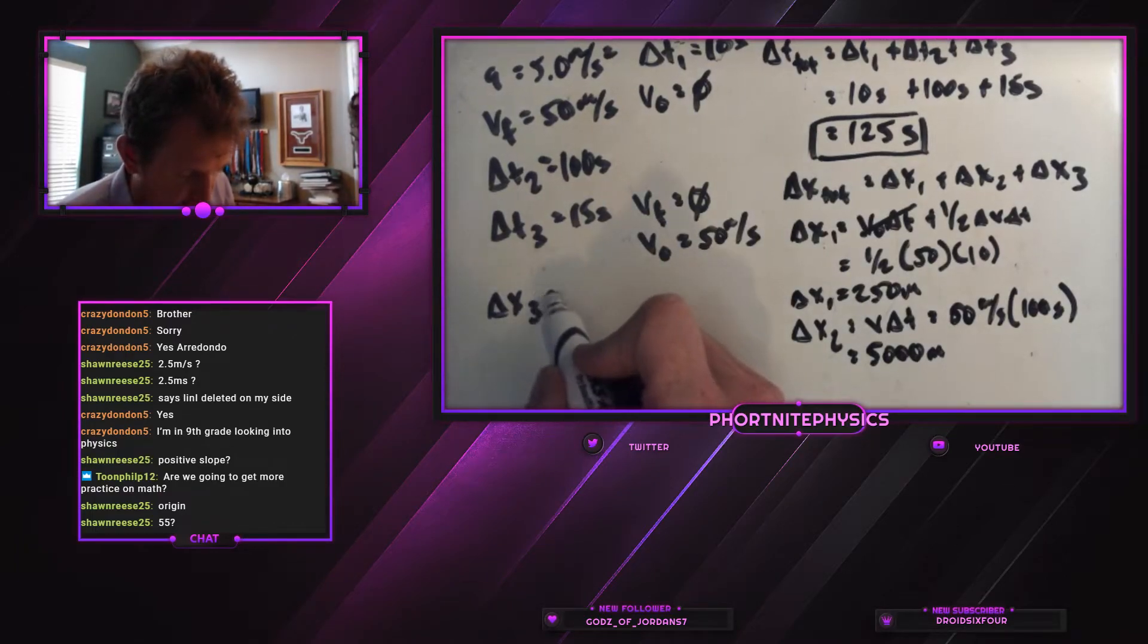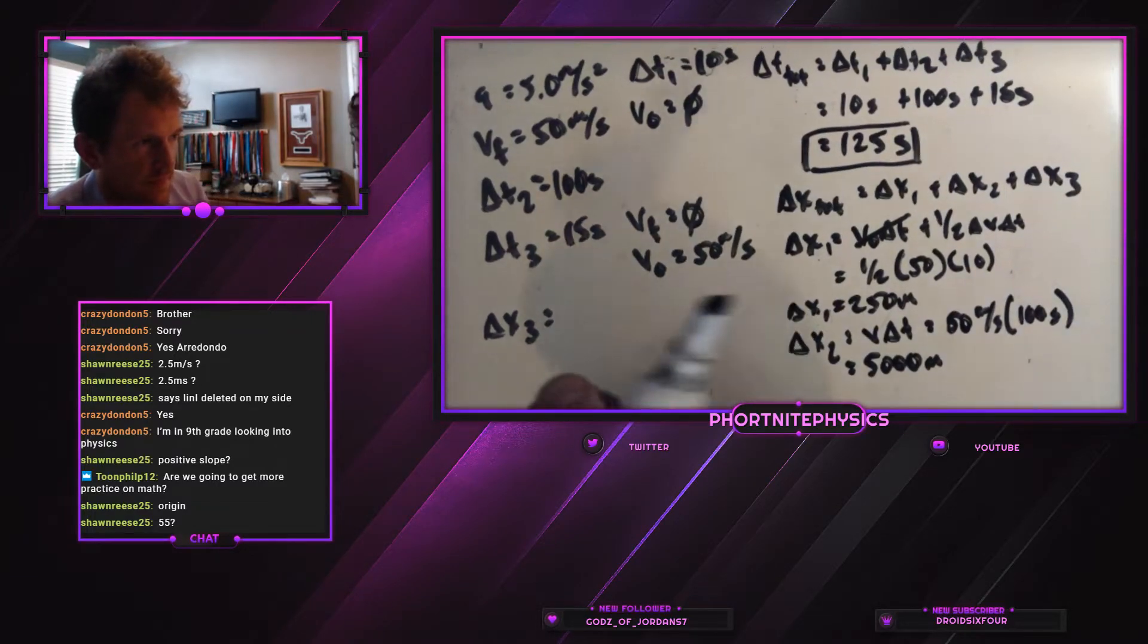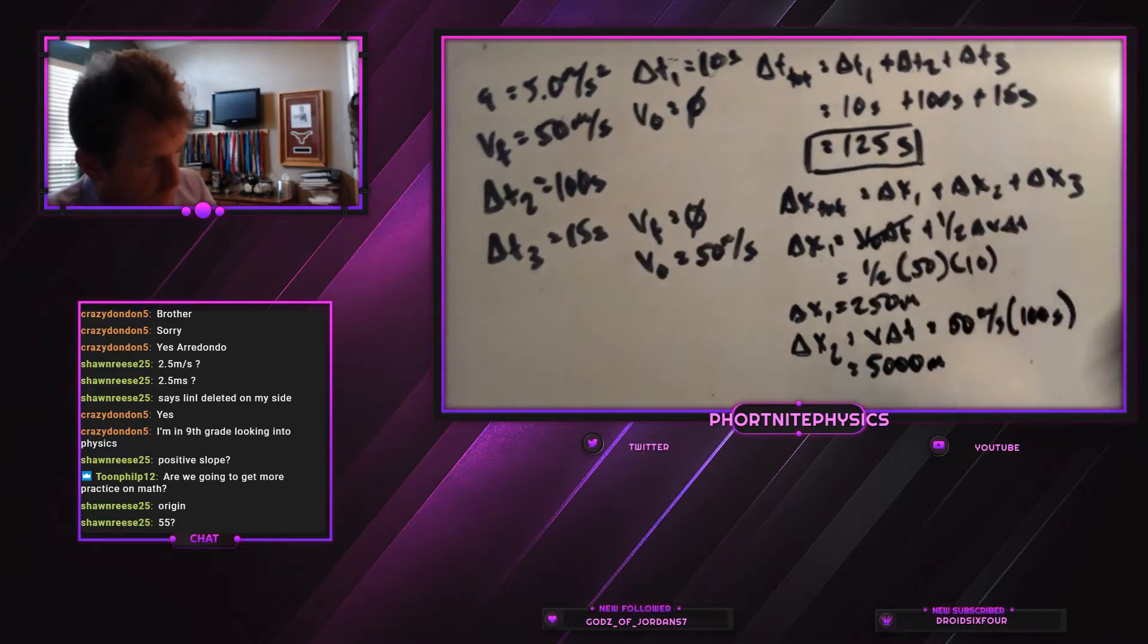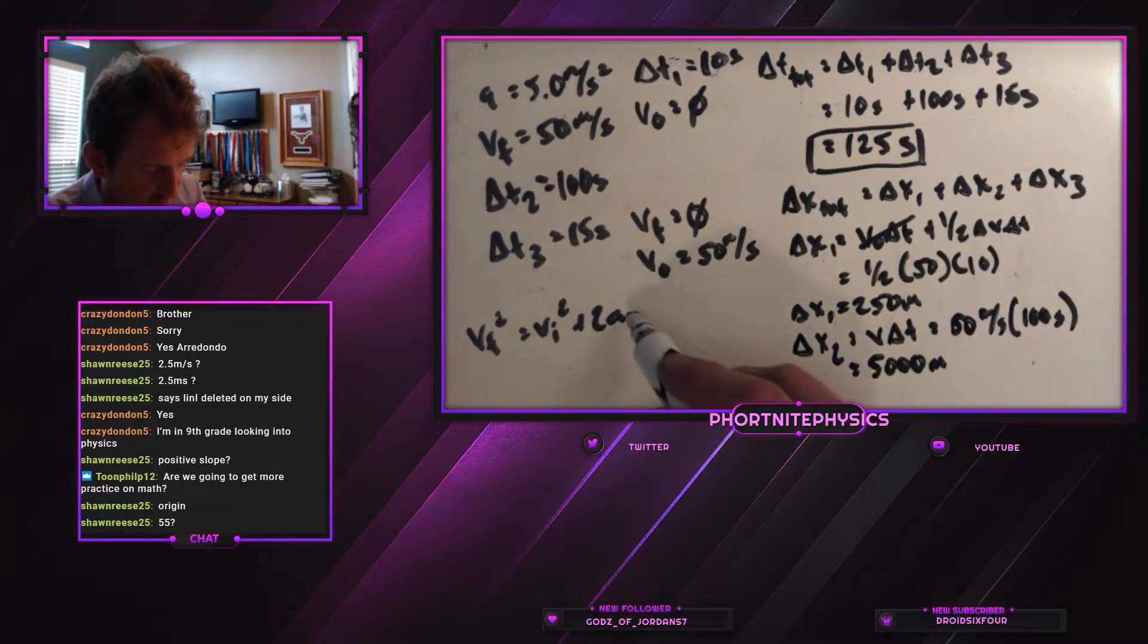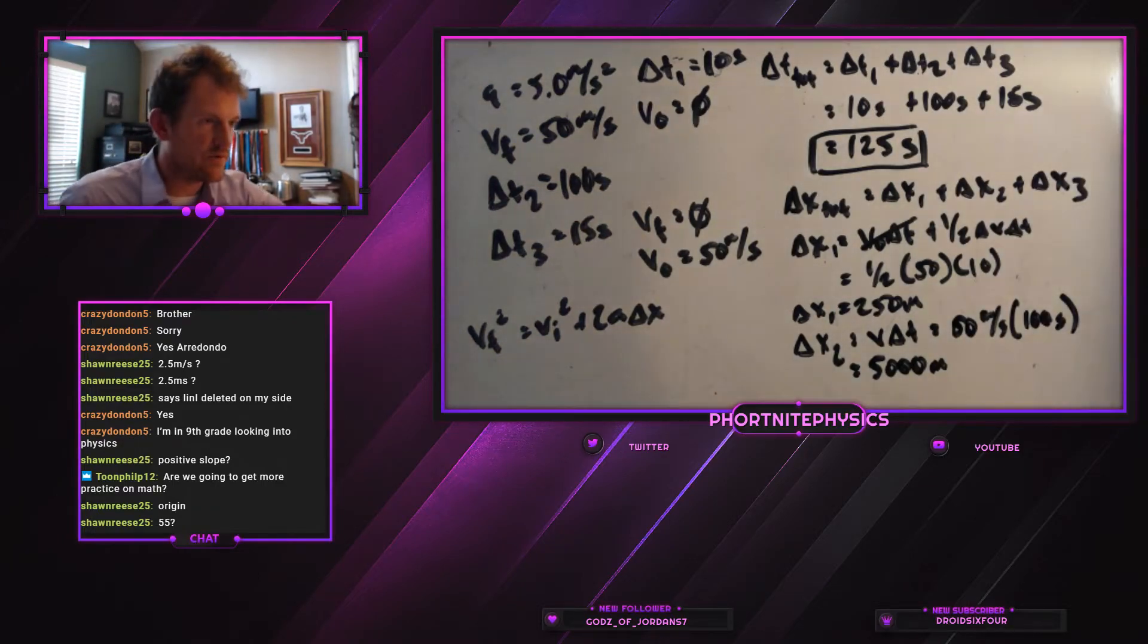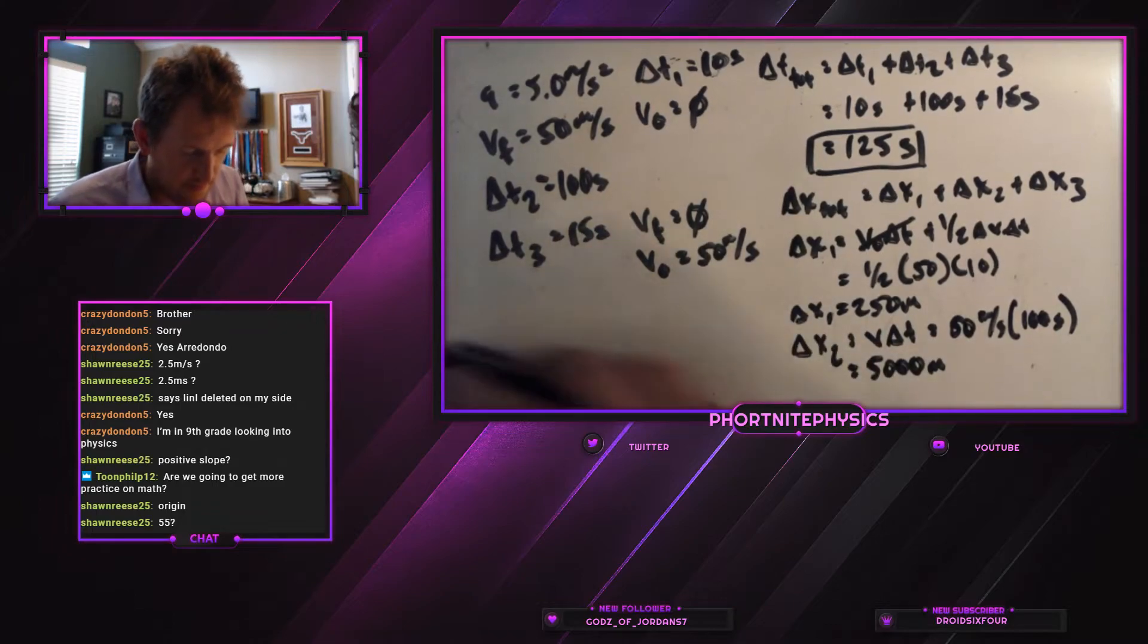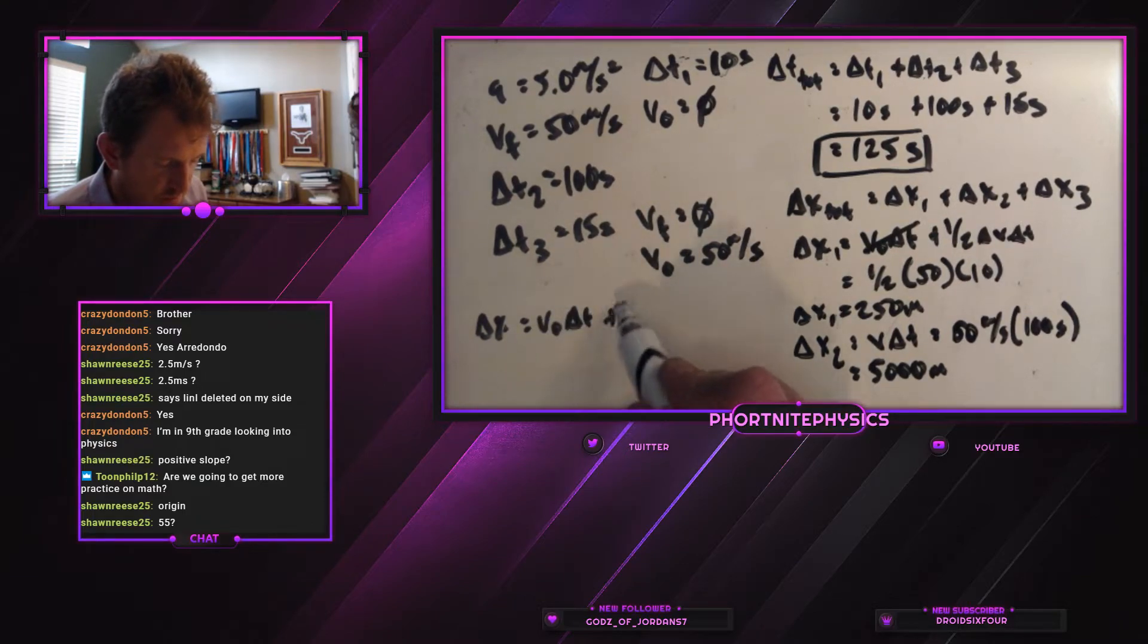Now, for delta x3, we've got to do the same thing as we did before. Actually, we could do a couple things. Let's go ahead and use one more different equation. So we have our vf squared equals vi squared plus 2a multiplied by x. Do we know our acceleration in the last one? We don't. So we don't know our a, we don't know our x. Actually, we can't use that one. Let's try again. So we'll just use the same one over.